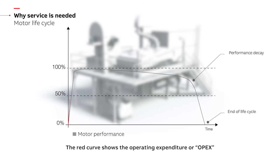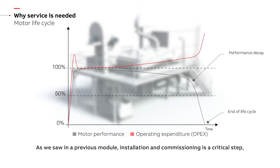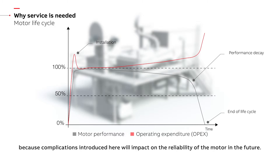The red curve shows the operating expenditure, or OPEX. As we saw in a previous module, installation and commissioning is a critical step because complications introduced here will impact on the reliability of the motor in the future.